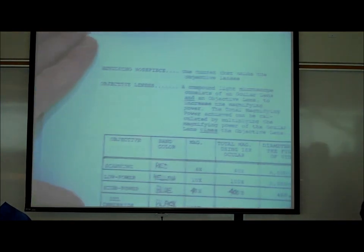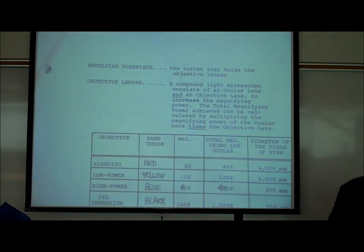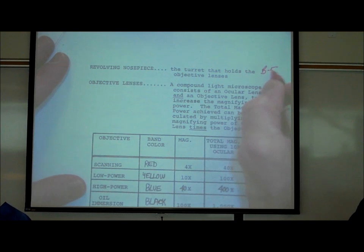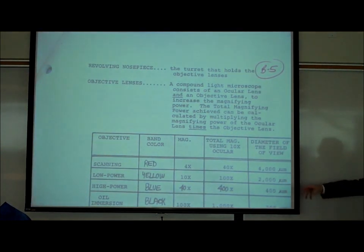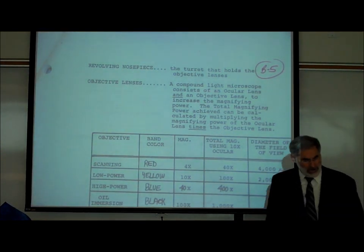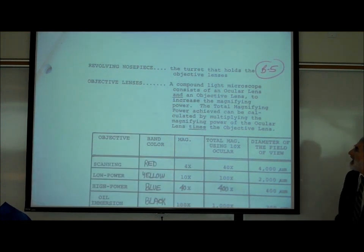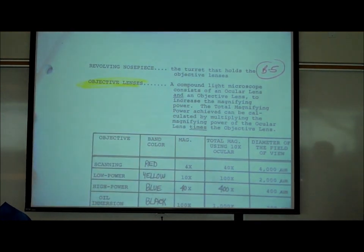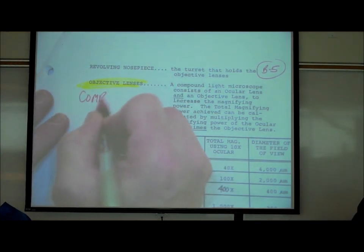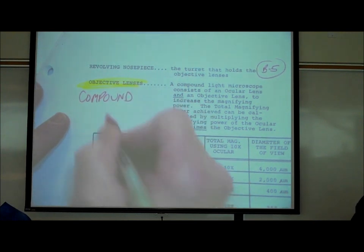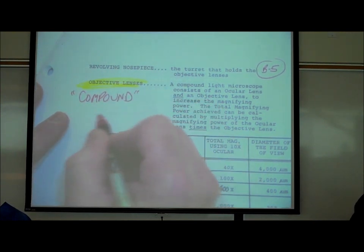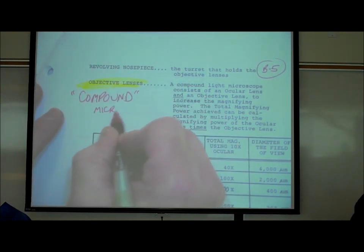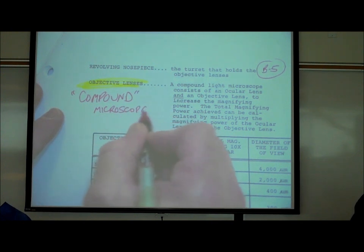On page B5, the revolving nosepiece — that turret you can turn — has four objective lenses attached to it. This is called a compound light microscope because it magnifies with two sets of lenses.